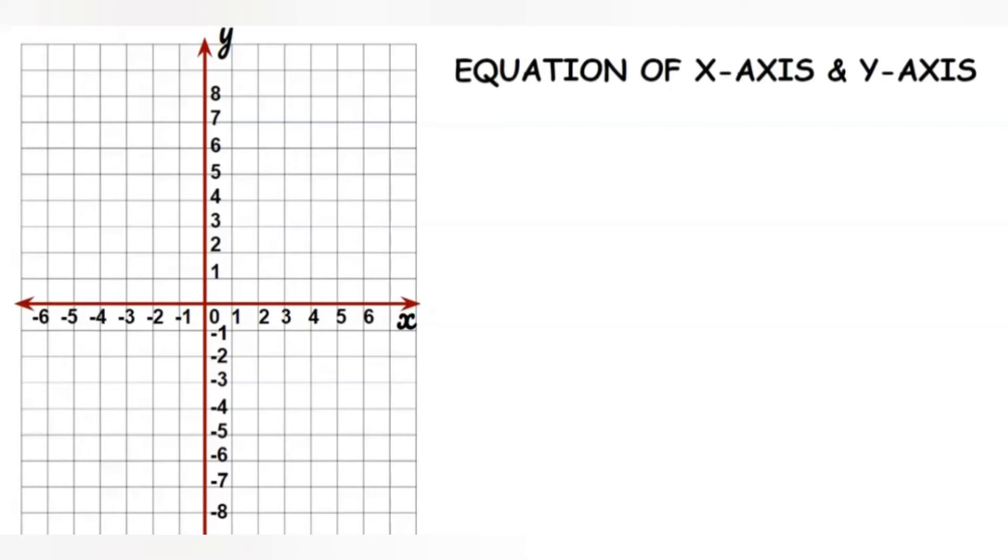Let us see some points on x-axis and their coordinates. This point is (3,0) and this point is (5,0) and this is (-2,0) and this is (-4,0) and so on.